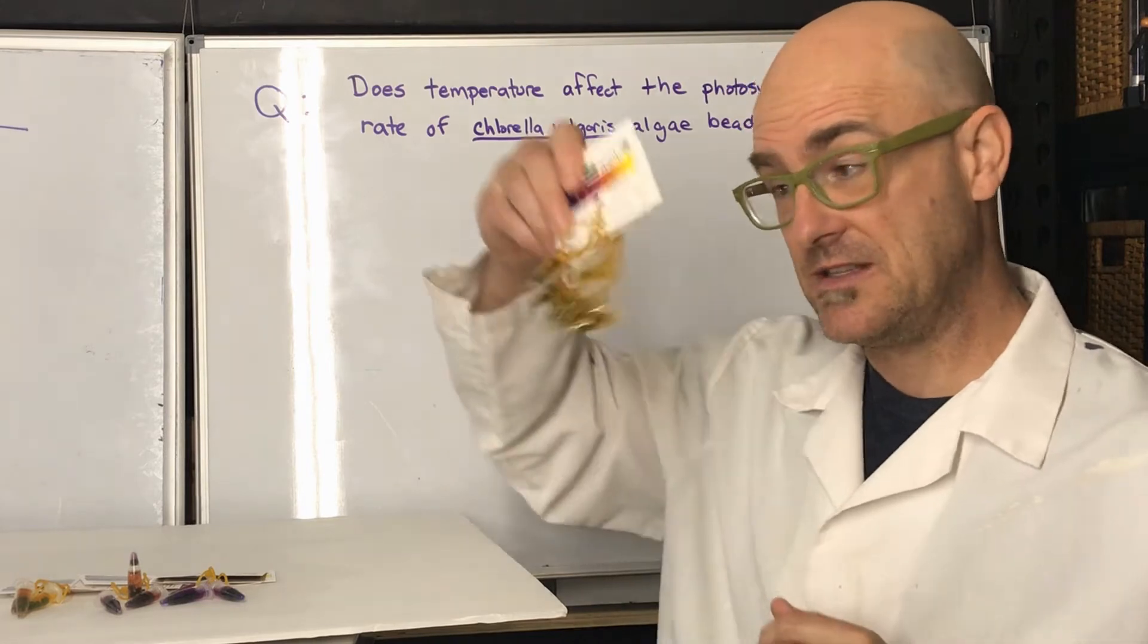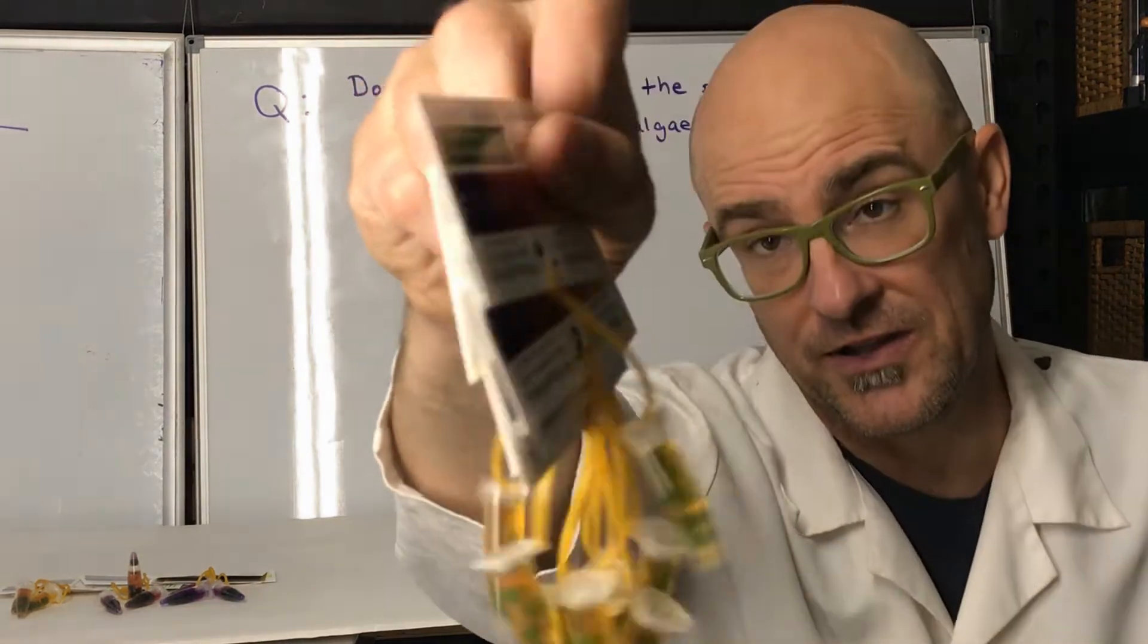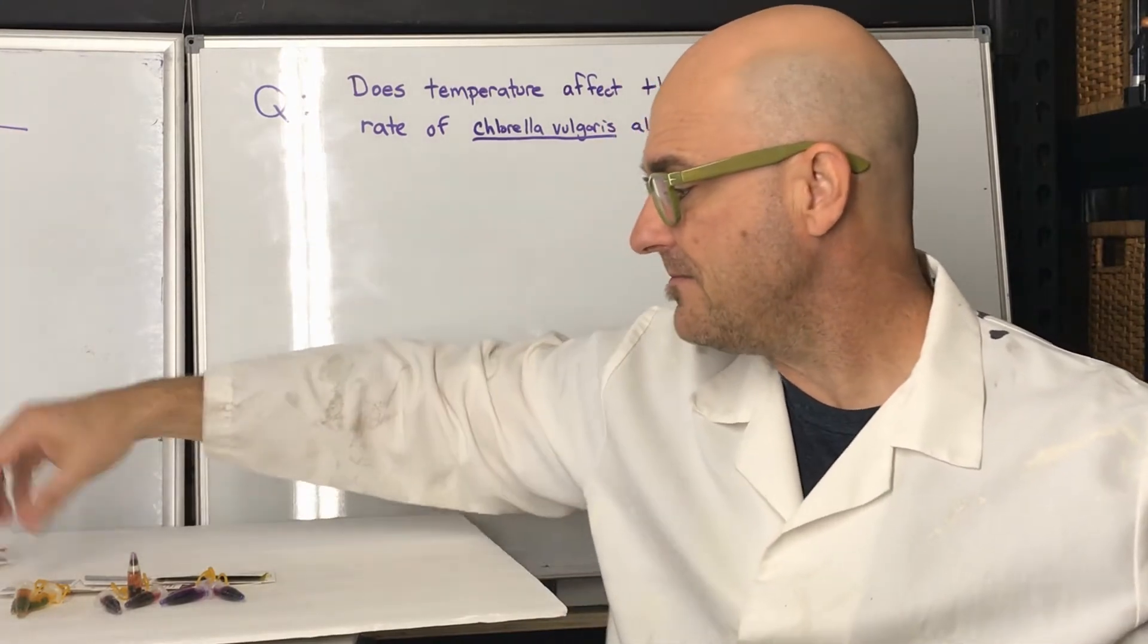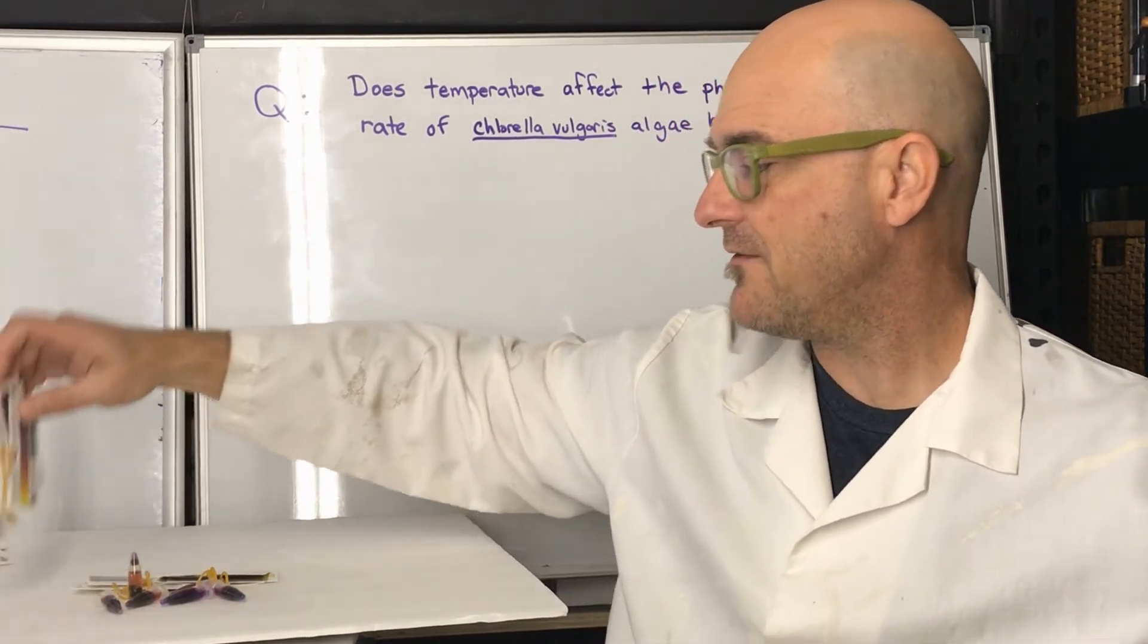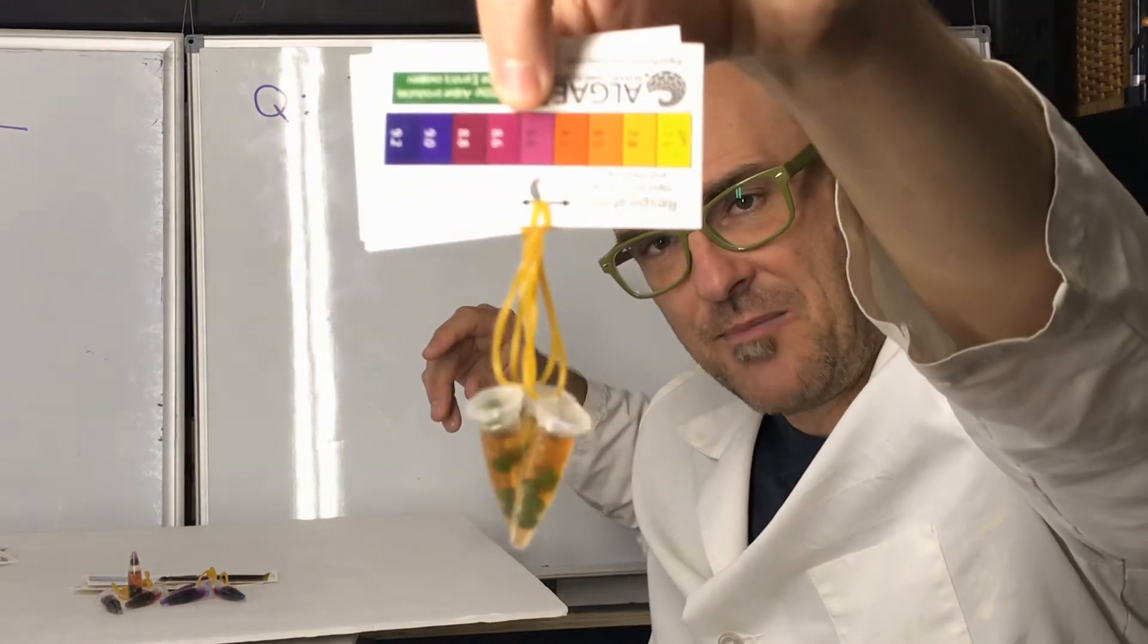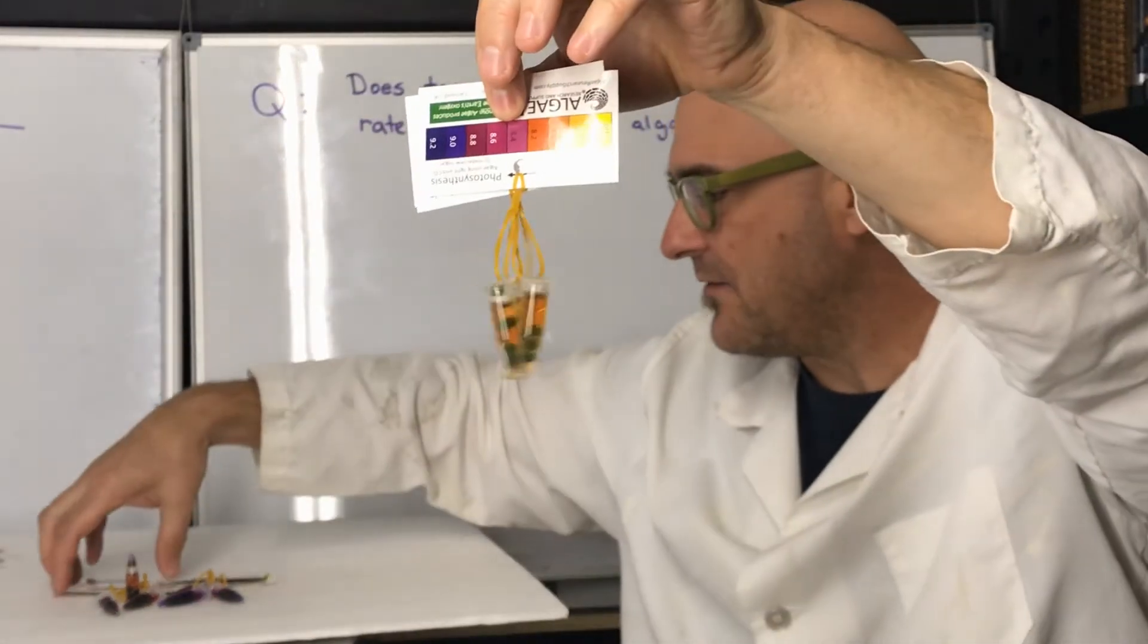After 45 minutes, they went from being yellow clear down there where the pH is below 7. For the cold temperature, this is the ice water, pretty much nothing happened. They stayed down below 7.6.